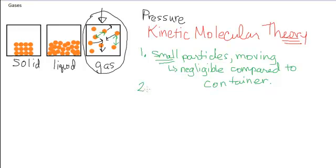So that's our first point in our kinetic molecular theory. This is sometimes referred to as the KMT, kinetic molecular theory, to explain why a gas behaves the way it does.